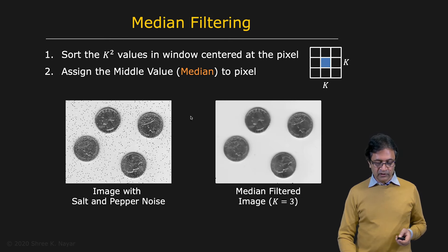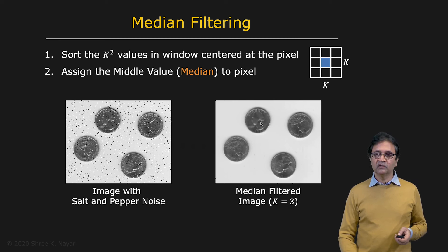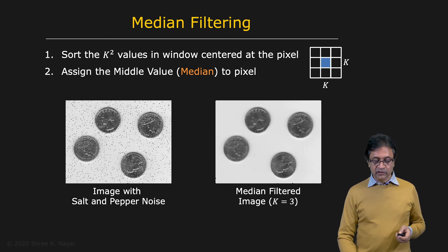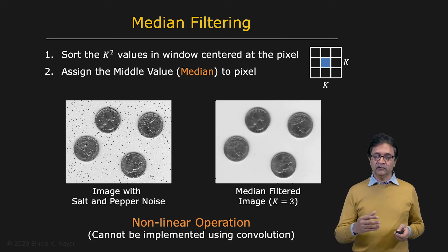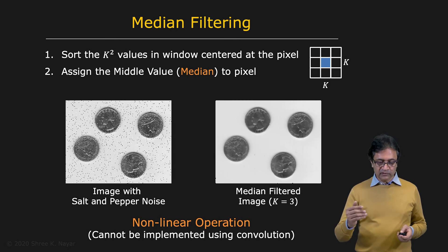You simply output the median as the intensity of that pixel — this is called median filtering. Here is our salt and pepper noise in the image, and when you apply median filtering with even a small filter, k equals 3, you see that you get a pretty nice result. Pretty much all the noise is gone. You do lose a little bit of detail on the coins, but it's a pretty impressive result for a very small 3 by 3 mask. Note that you cannot implement a filter like this using convolution — it's more algorithmic in nature, and therefore it is a nonlinear filter.